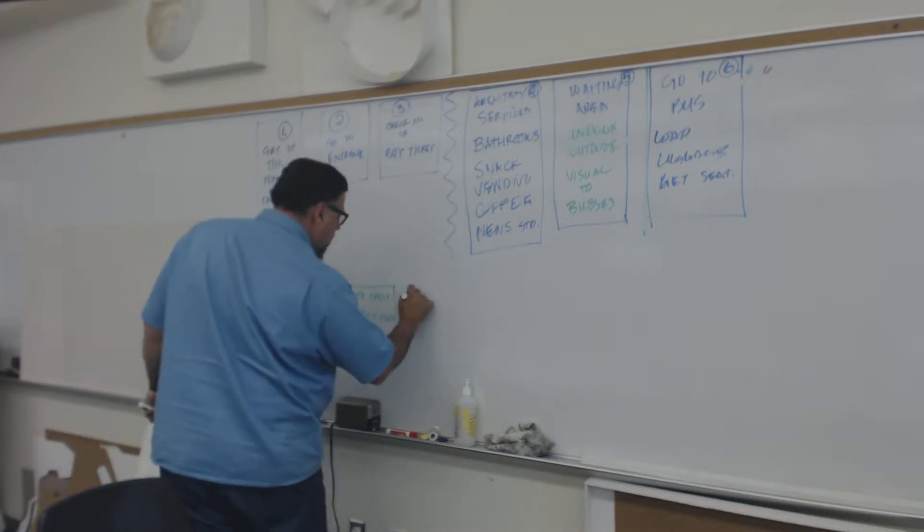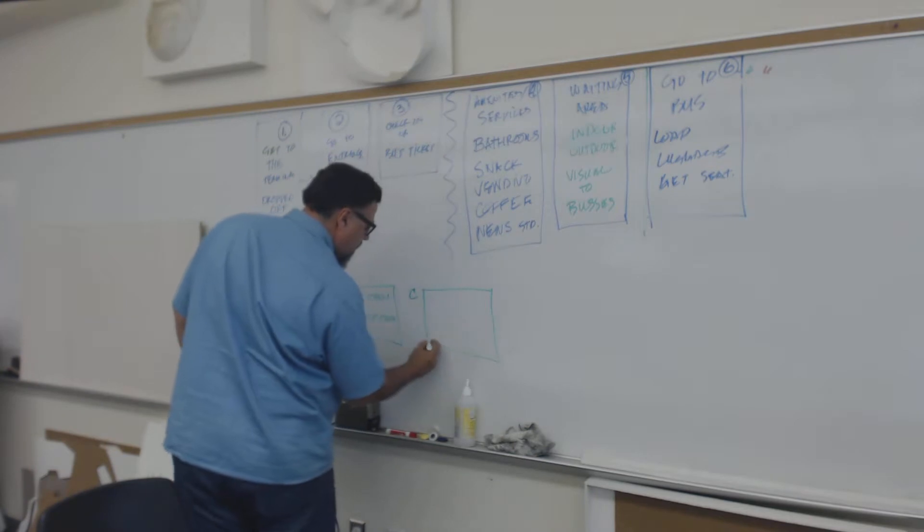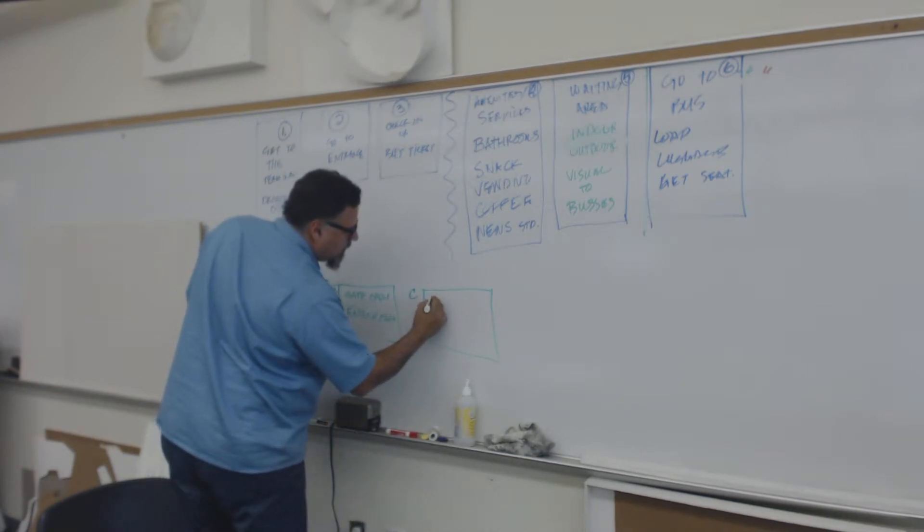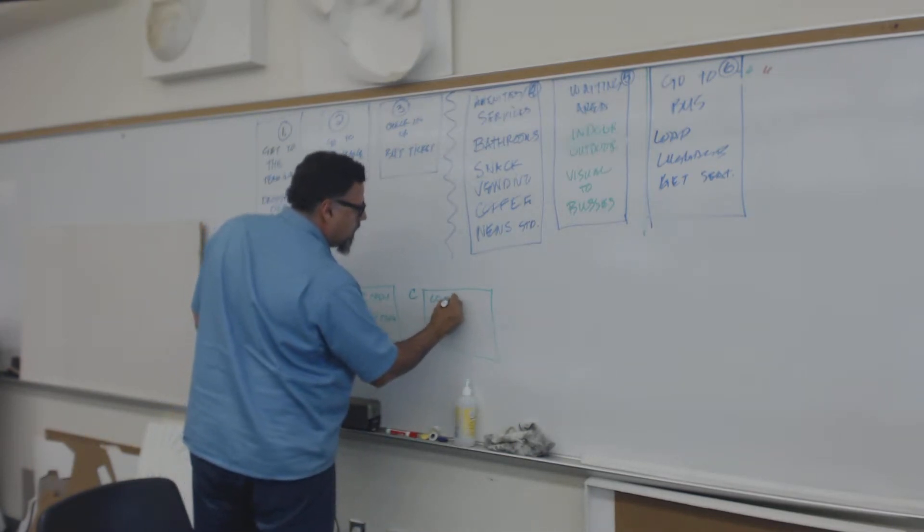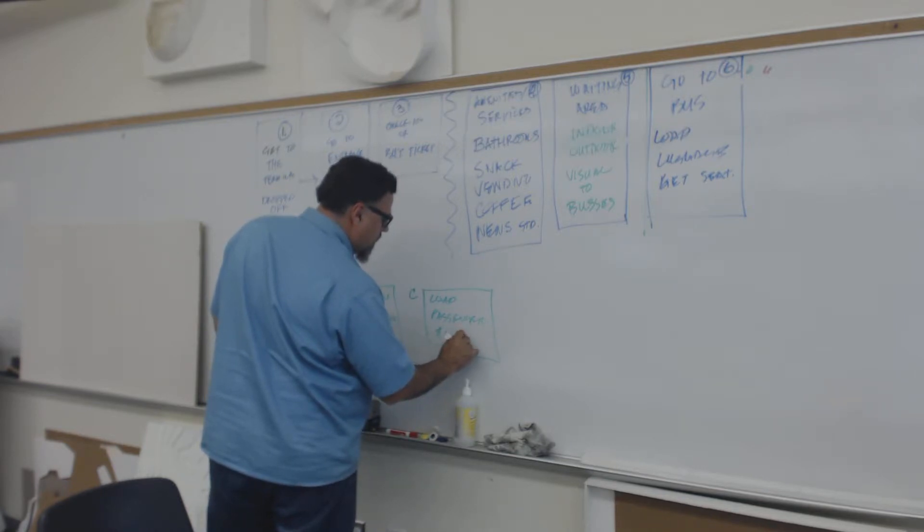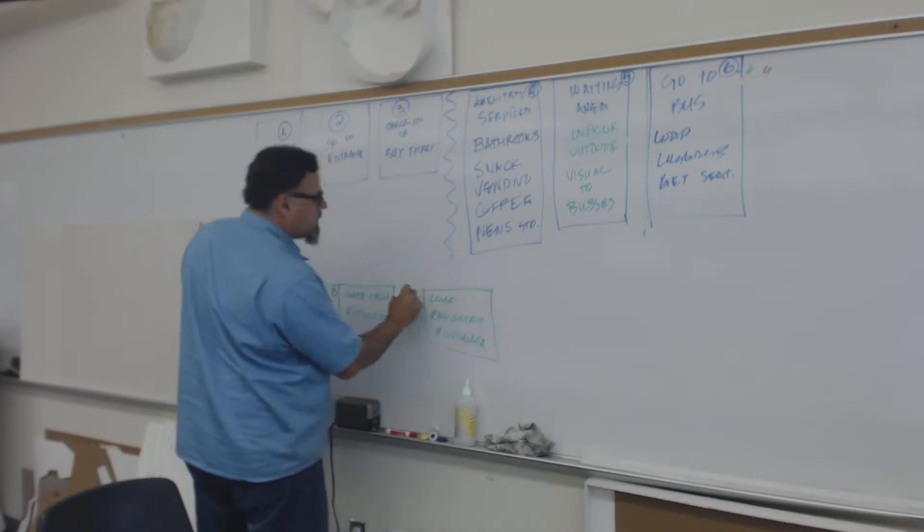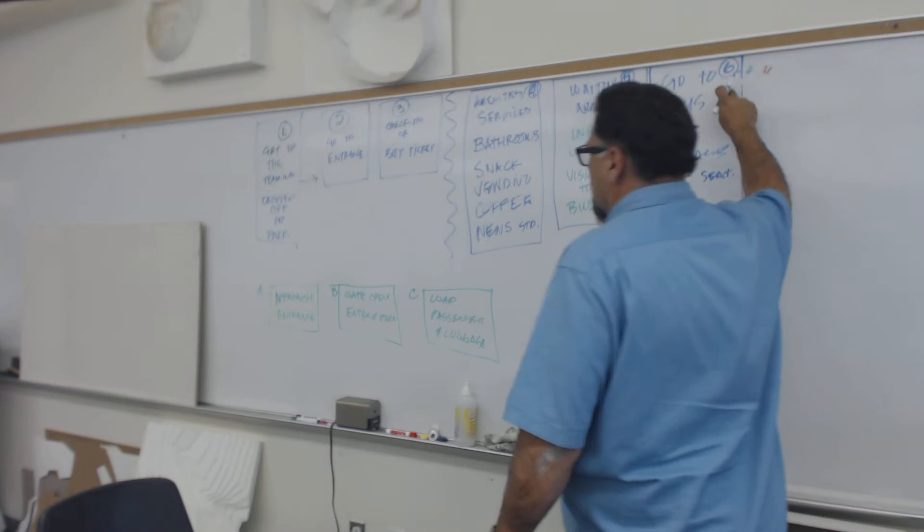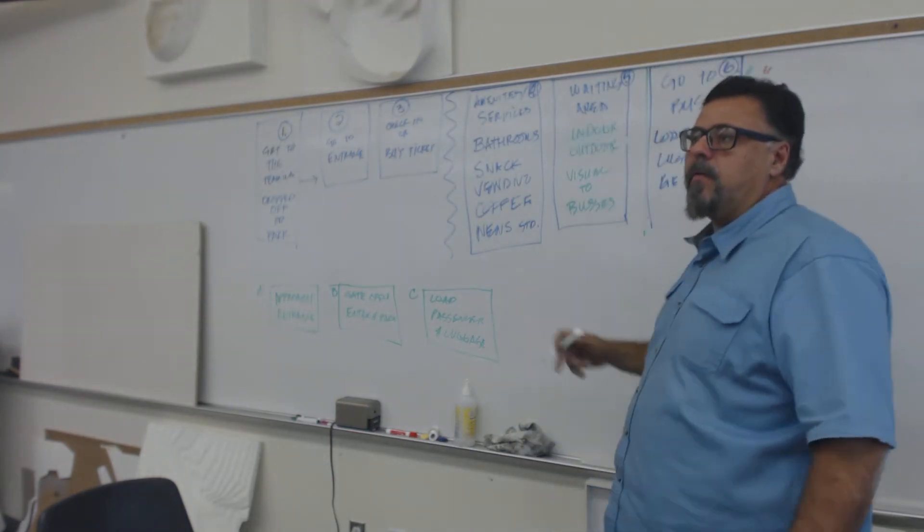Step C is load passengers and luggage. So this right here, C and number 6, are where they overlap.